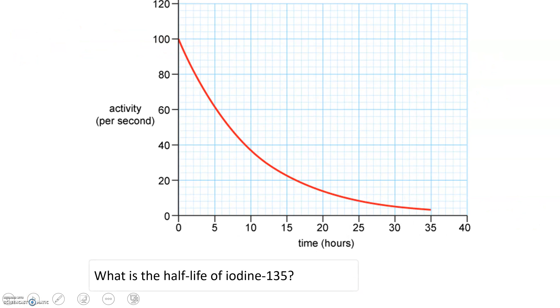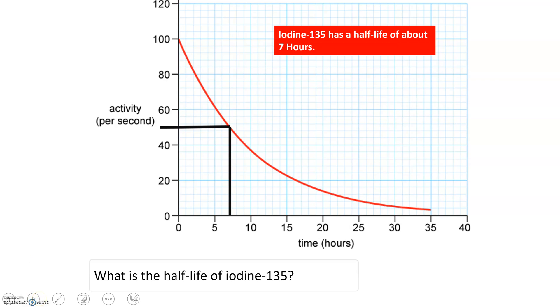Now another isotope of iodine-135 this time, again you can do the same process, starts 100, dot across at 50, dot down, you see we get a much shorter half-life for this isotope. So remember the half-life is dependent on the isotope you have, in this case iodine-135 is much shorter, and therefore will decay quicker than the other one.